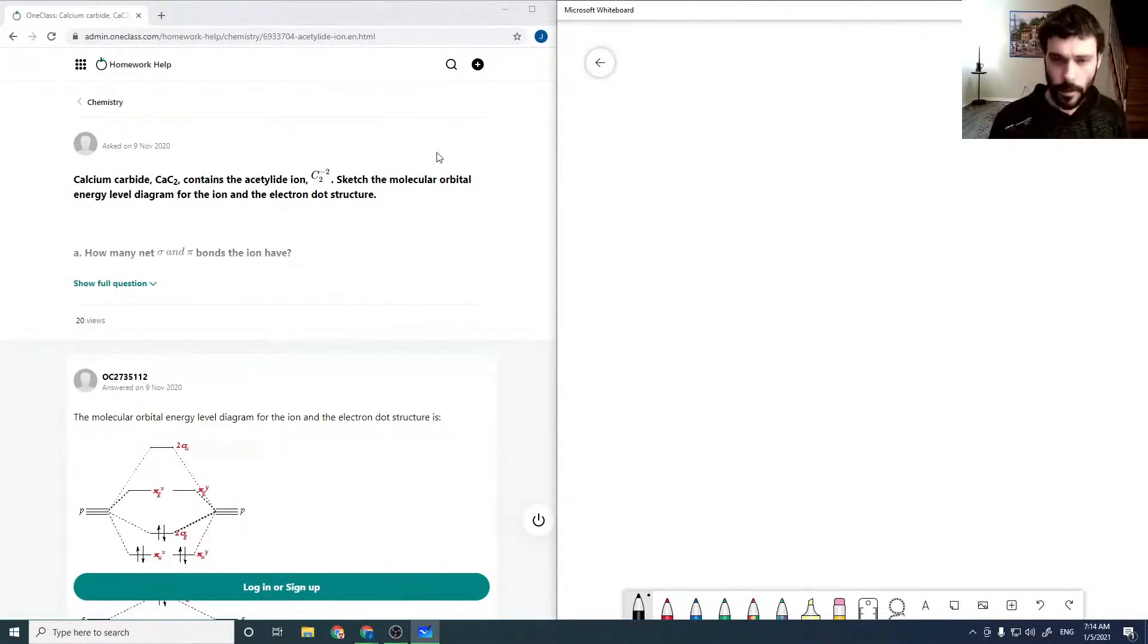Alright, so for our 7th question here, calcium carbide contains the acetylide ion, C2 2-. Sketch the molecular orbital energy level diagram for the ion and the electron dot structure.